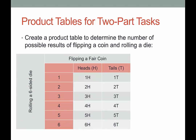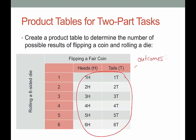There it is, filled in nice and neat — this is the complete product table. The question is: how many possible outcomes are there? There are 12 outcomes. If we list the sample space: one heads, one tails, two heads, two tails, three heads, three tails, four heads, four tails, five heads, five tails, six heads, and six tails — and we close out our sample space. This demonstrates using a product table to display all possible outcomes for two-part tasks.